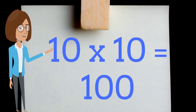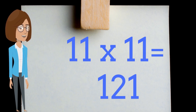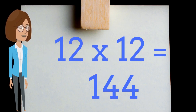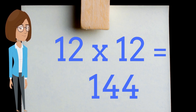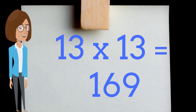Ten times ten is one hundred. Eleven times eleven is one hundred twenty-one. Twelve times twelve is one hundred forty-four. Thirteen times thirteen is one hundred sixty-nine.